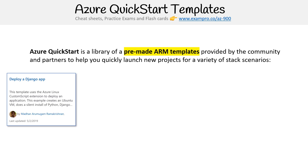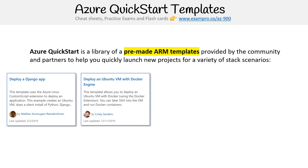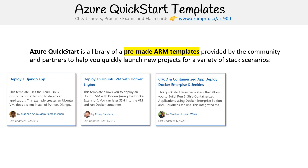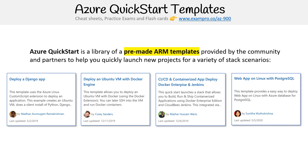So you could go to the Azure Quickstart and, let's say, you wanted to deploy a Django app — and it's also vendor and community contributed scripts. If you want to deploy Ubuntu with a Docker engine, you could use that script. If you wanted a CI/CD containerized app with Docker Enterprise and Jenkins, you could use that script. And if you wanted a web app running Linux with Postgres, you could use that script. So it's just a quick way of getting started.